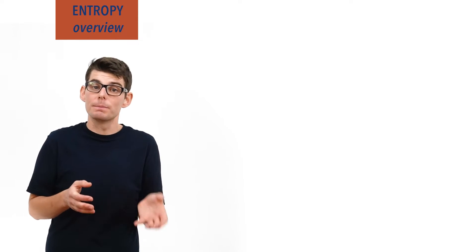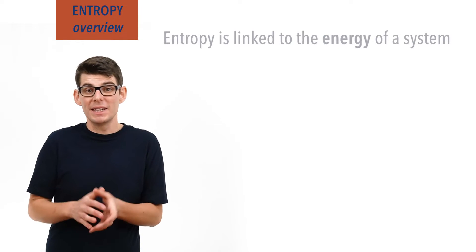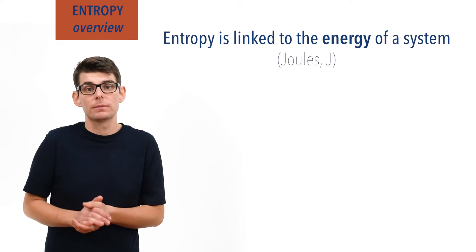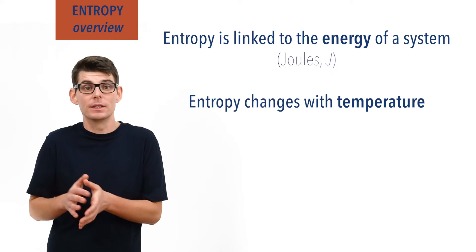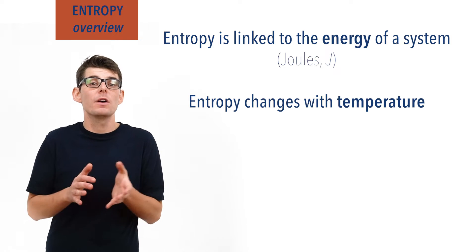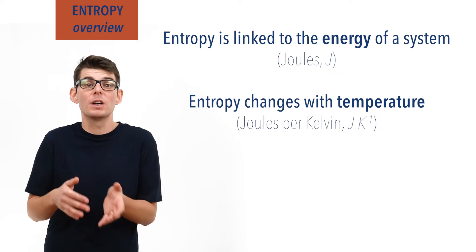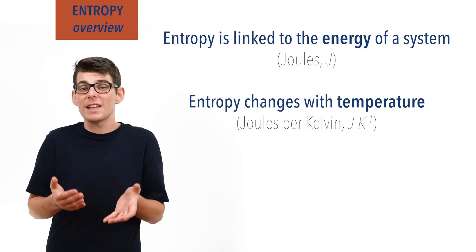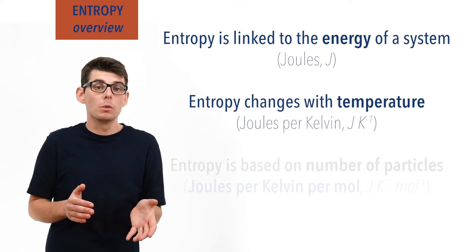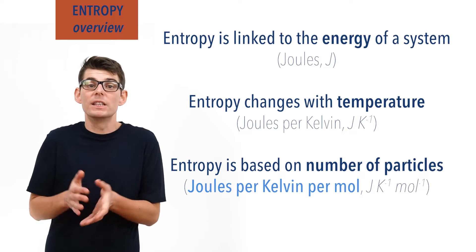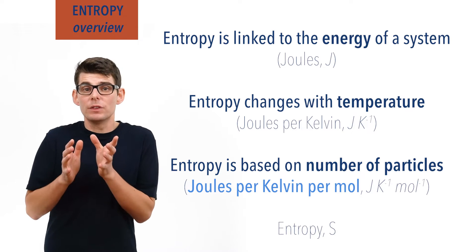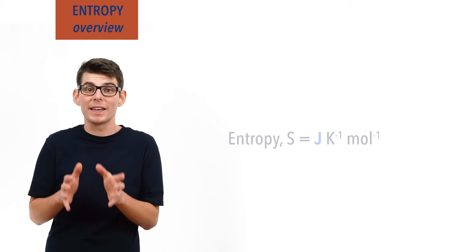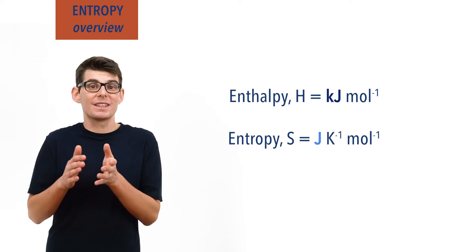For reasons that will be explained in part two, the entropy of a system is linked to stability and energy, meaning it is measured with joules — the unit for energy. We've also seen that entropy changes with temperature, meaning this also has to be considered, giving entropy the units of joules per kelvin, essentially energy per degree kelvin of temperature. For standard entropies we also measure entropy per mole — the amount of particles in a system. It is represented with the letter S. It is important to remember that the unit of energy in entropy is joules, unlike enthalpy where kilojoules are used.